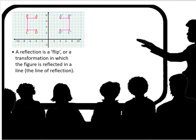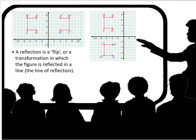A reflection is a flip, or a transformation in which the figure is reflected in a line, which we call the line of reflection. In the first case, the line of reflection is the y-axis. And over to the right, you see the reflection is across the x-axis. It is the mirror image of the original figure.